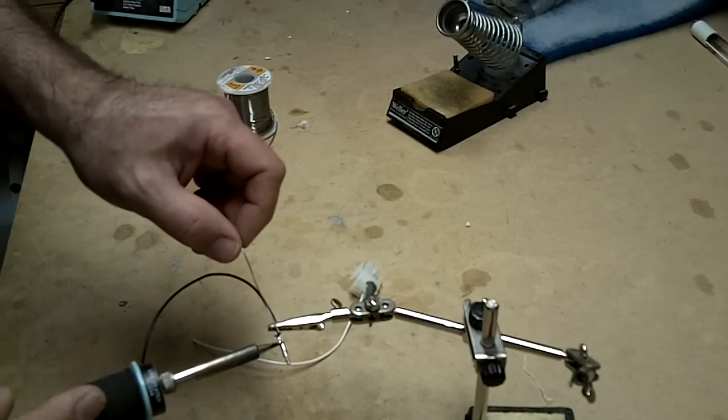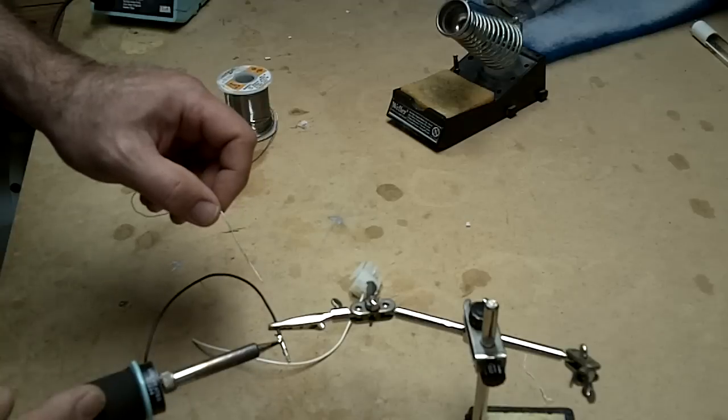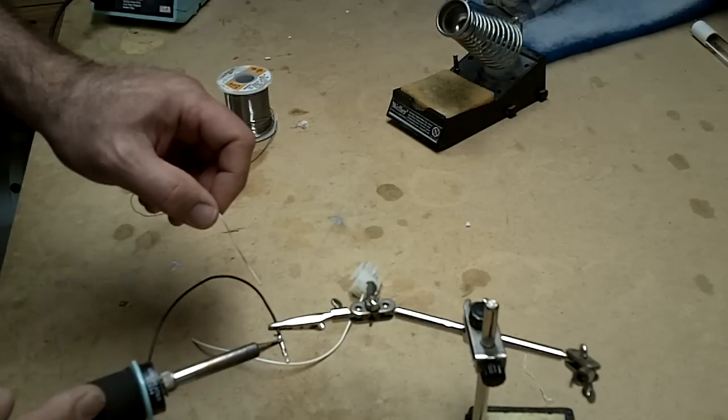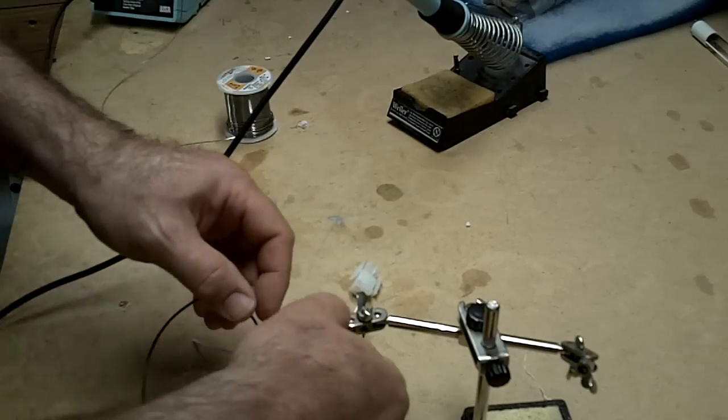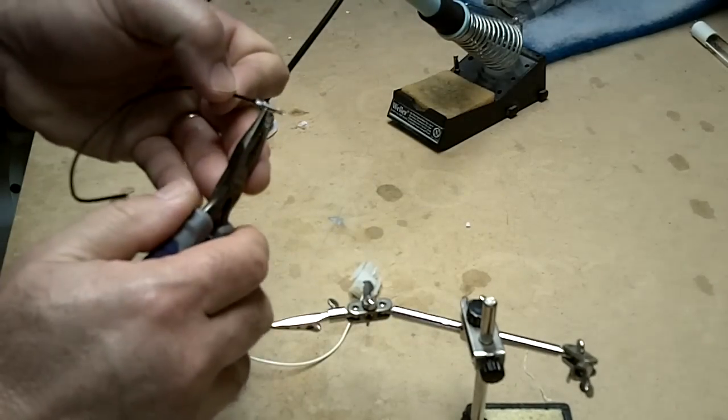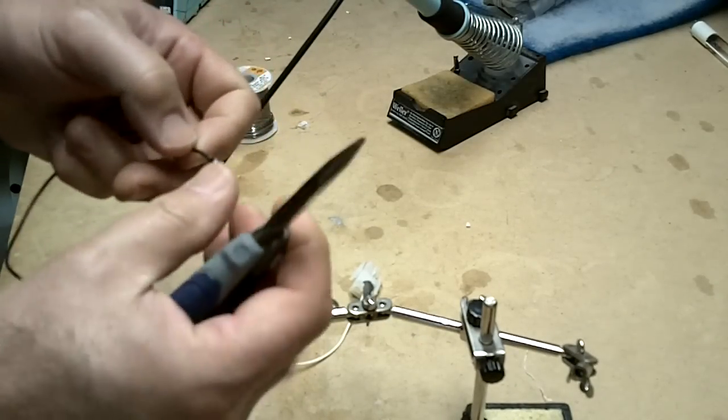Apply heat to the tab that I just folded over. Put a nice dab of solder right there. Don't worry about it globing up right now. As soon as it heats the inside of the tab up, it flows right in just like that.